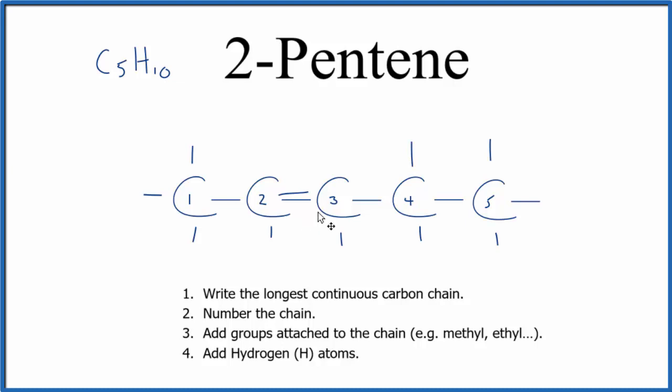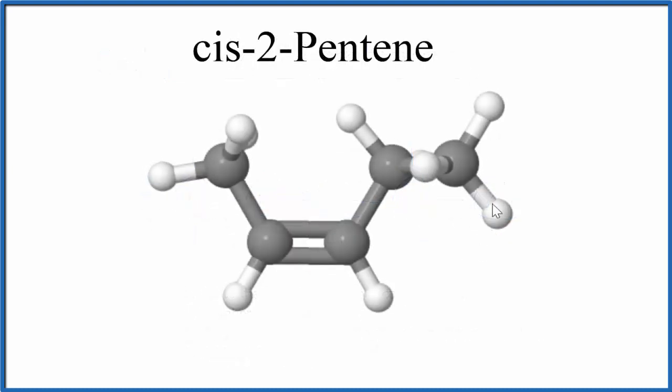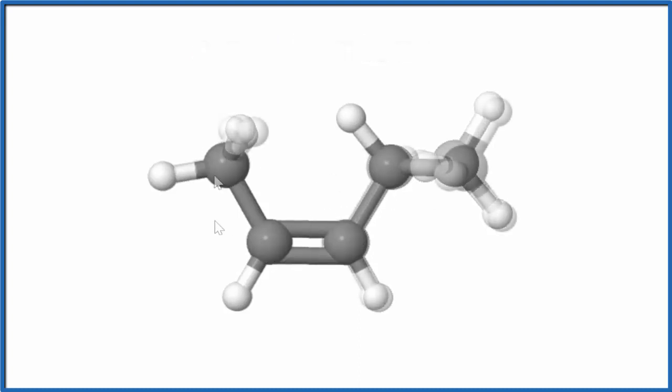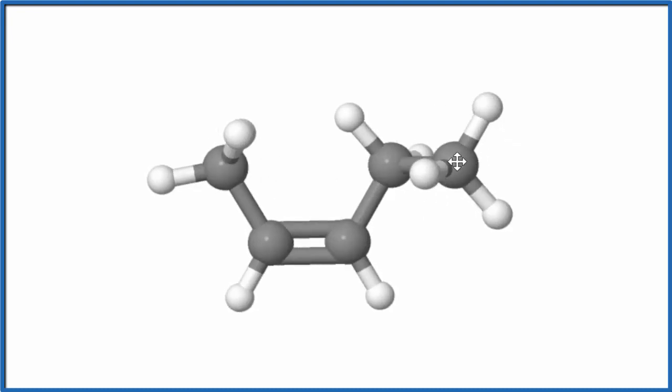Let's take a look at the cis isomer first. So this is 2-pentene. We have one, two, there's our double bond, three, four, five, five total carbons. And you can see that both of the substituents, the methyl group and then the ethyl group, they're on the same side of that double bond.